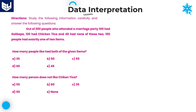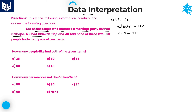The first piece of information is: out of 200 people who attended a marriage party, 100 members had Golgap and 120 members had Chicken Tikka. The information is about what food items they had taken. Out of 200 members, 100 are taking Golgap and 120 are taking Chicken Tikka.